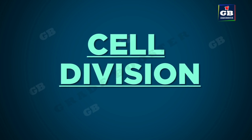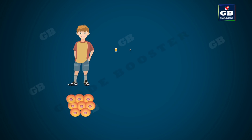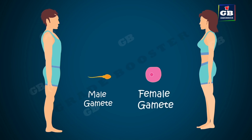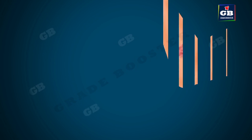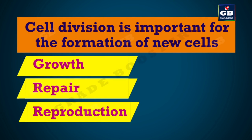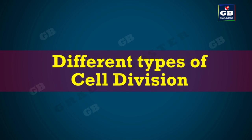Living things grow and reproduce. Growth means adding new cells to the body — new cells come from cell division. To reproduce, organisms produce new reproductive cells or sex cells, also produced by cell division. Sometimes cells get damaged and new cells are required to replace them, again formed by cell division. So cell division is important for the formation of new cells for growth, repair, and reproduction.